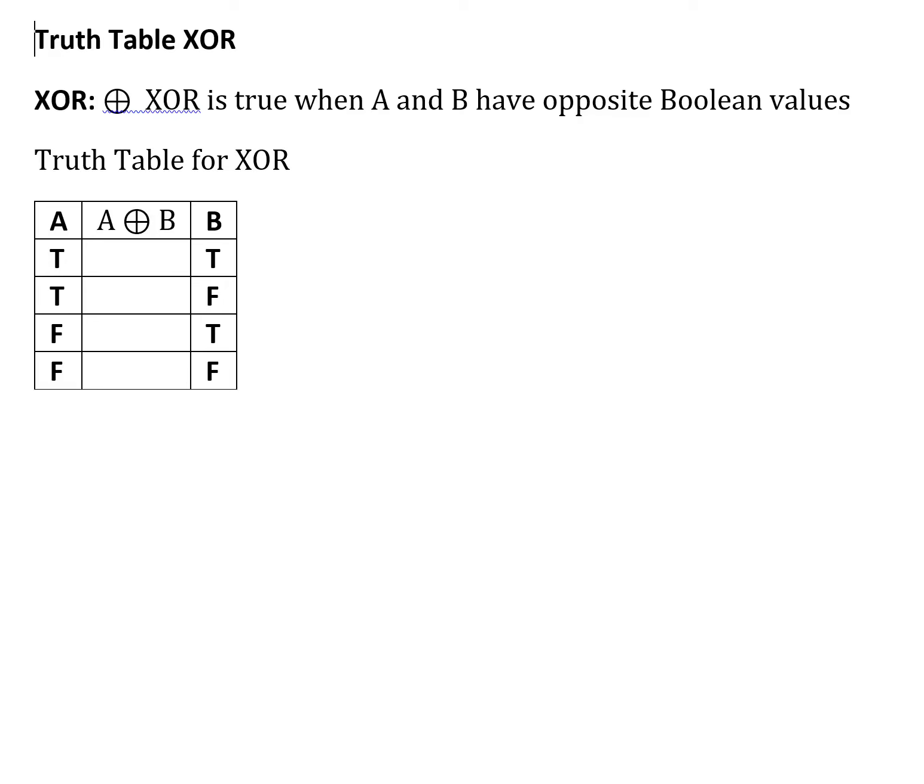Truth tables for XOR. XOR is denoted with the symbol of a circle with a plus sign inside of it. XOR is true when A and B, or P and Q, or two statements, have opposite Boolean values.